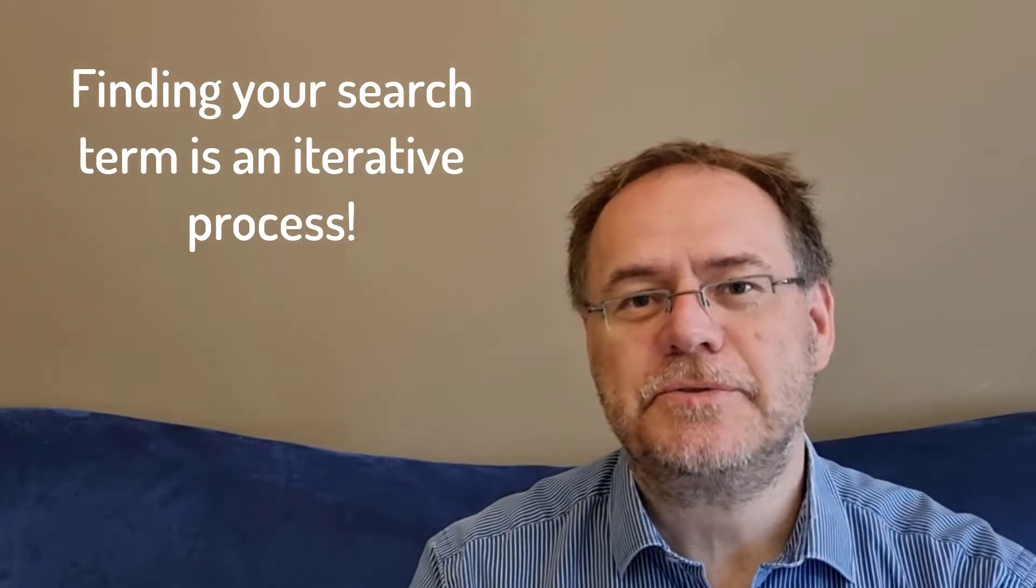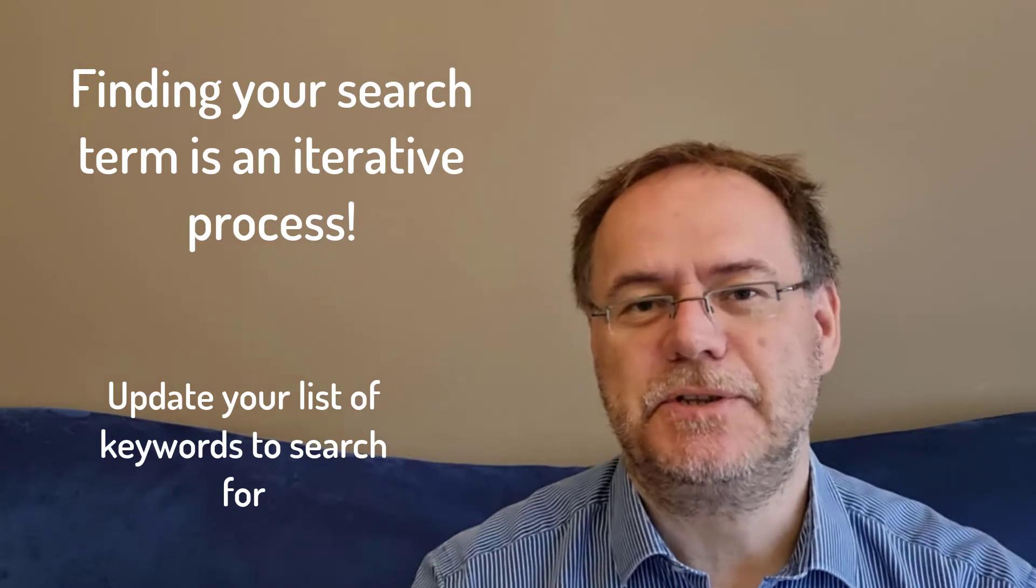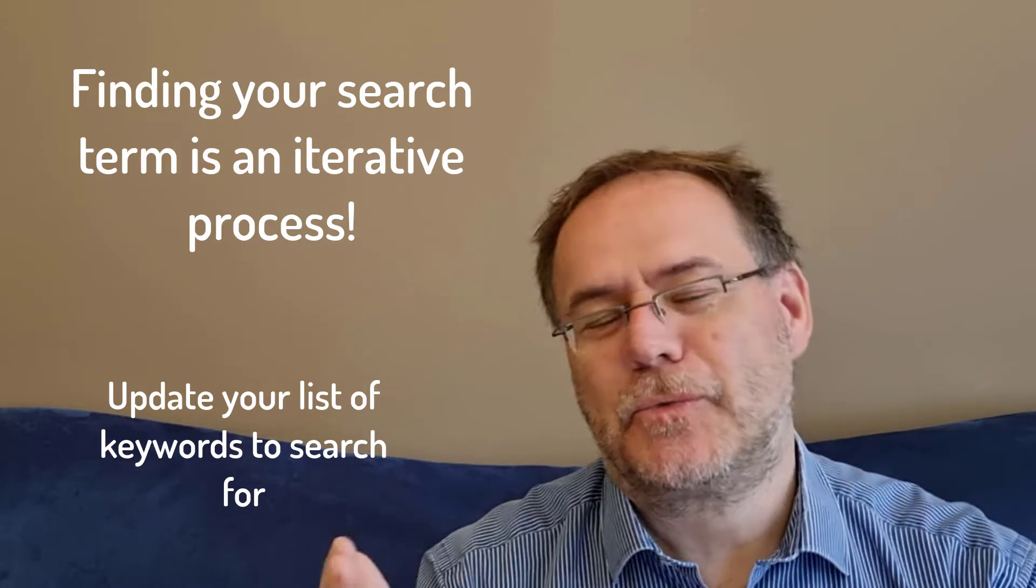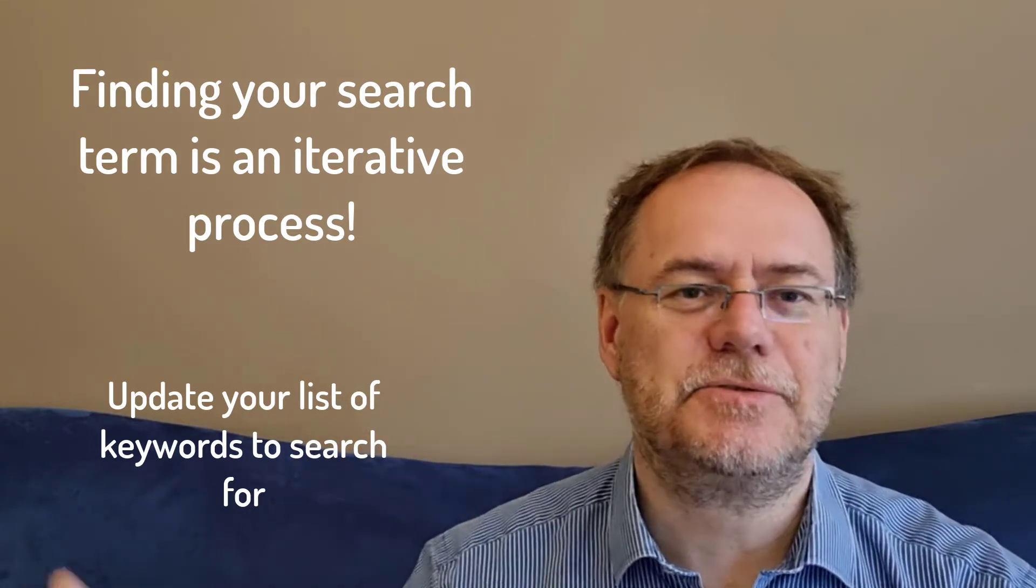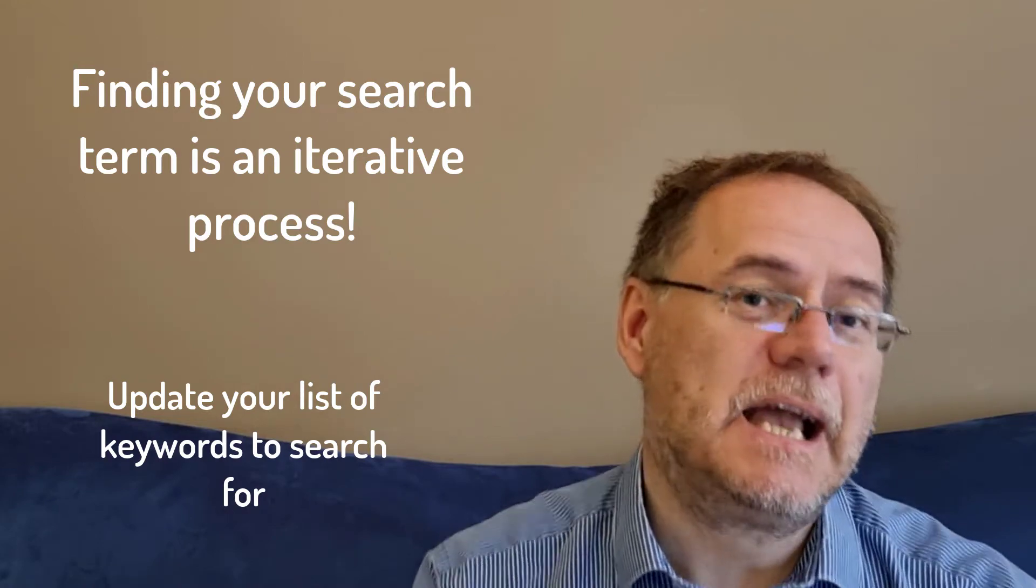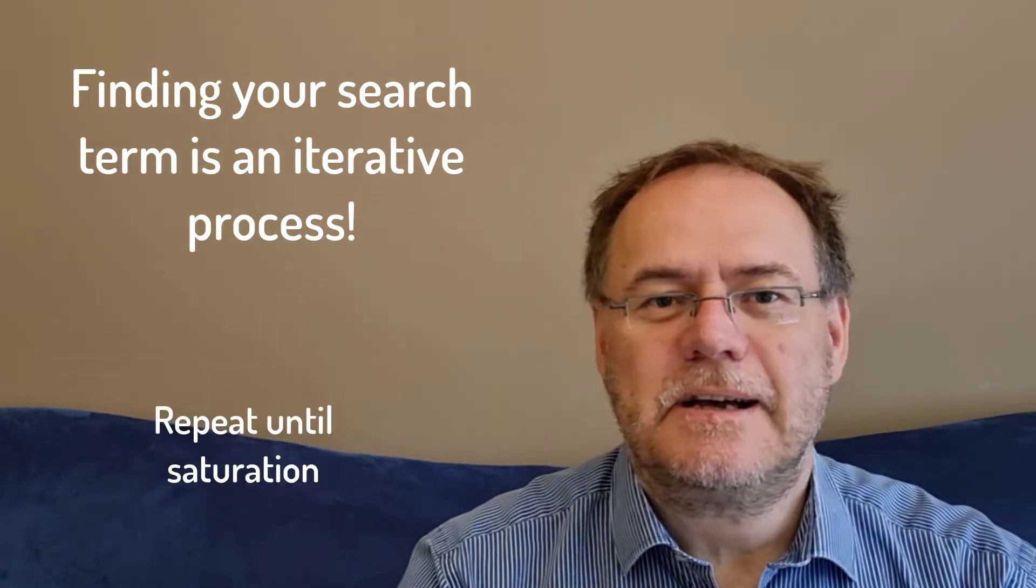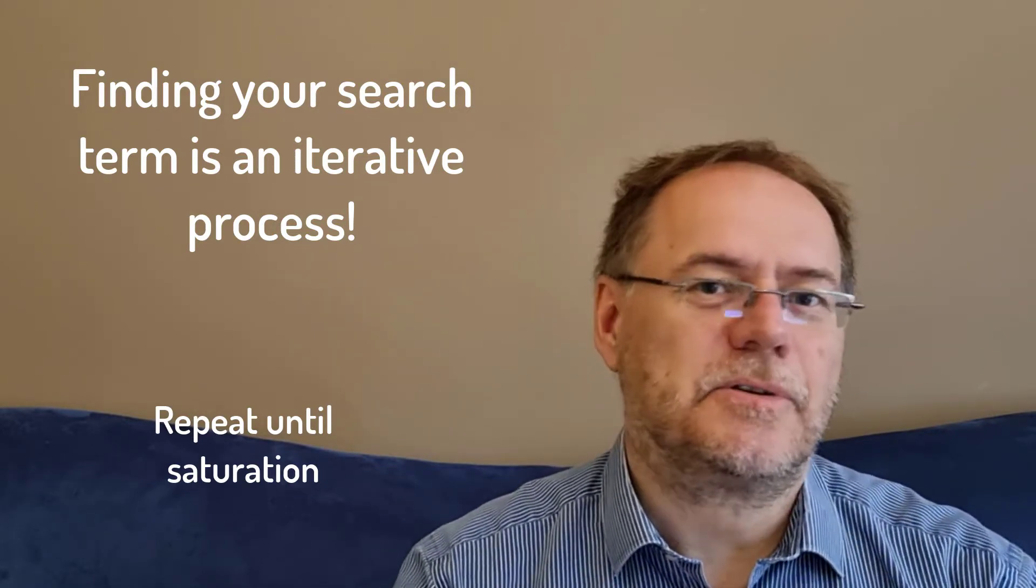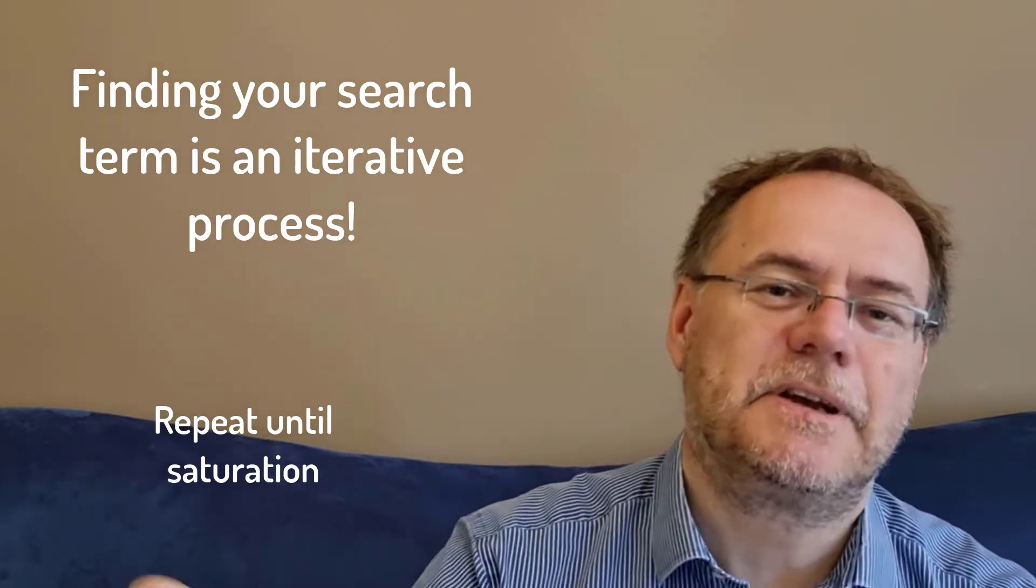And then what you do is you check what words do these papers use. And if they use a different word or different variation on that word like hyphenated or plural or whatever, then you add that to your list of search terms and you repeat your search. And now you repeat this process until you no longer find any new search terms and you no longer get any new hits. And then you're at the point where you can be fairly confident that you have collected the right search terms.